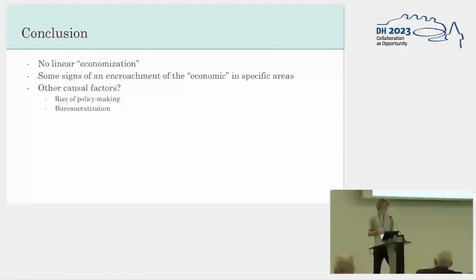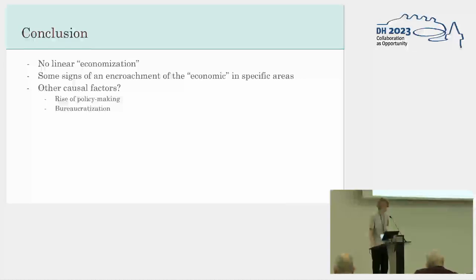To conclude: there's no linear economisation — that's the first conclusion as a historian. But there are some signs of an encroachment of the economic in specific areas, for example austerity.